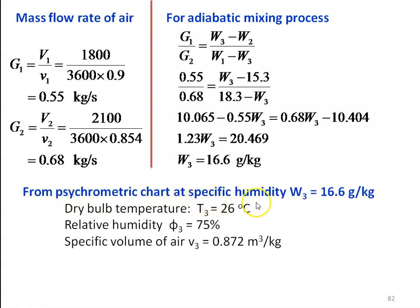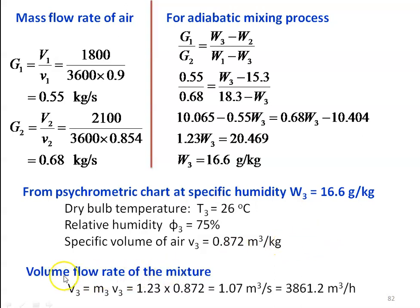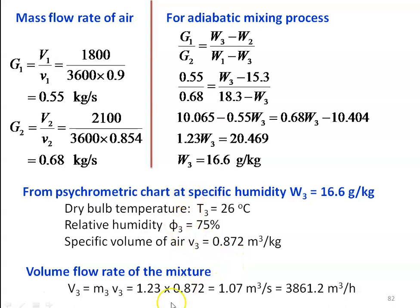From the psychrometric chart, at specific humidity W3 = 16.6 g/kg: dry bulb temperature is 26°C, relative humidity is 75%, and specific volume V3 = 0.872 m³/kg. The volume flow rate of the mixture V3 = M3 × v3. Total mass M3 = G1 + G2 = 1.23 kg/s. So V3 = 1.23 × 0.872 = 1.07 m³/s, or 3861.2 m³/hour. That is the volume flow rate. These are all the properties of the mixture — this is the answer to the problem.